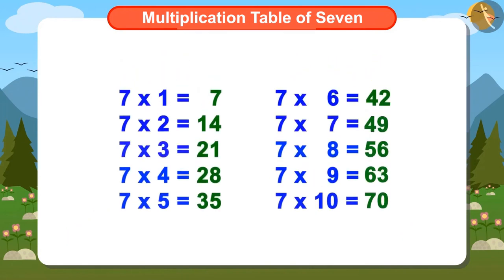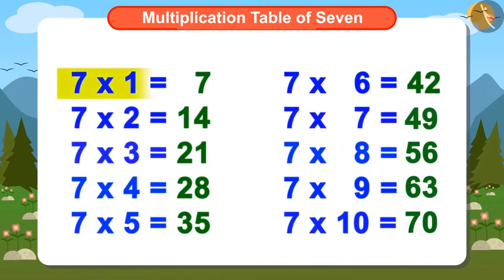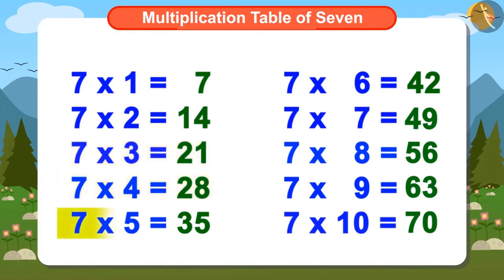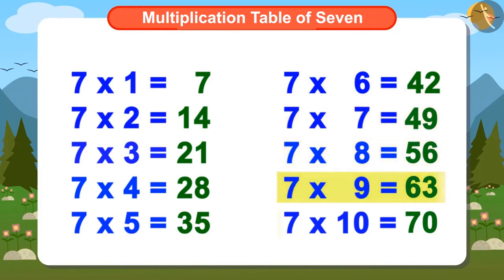Let's memorize it by singing: 7 ones are 7, 7 twos are 14, 7 threes are 21, 7 fours are 28, 7 fives are 35, 7 sixes are 42, 7 sevens are 49, 7 eights are 56, 7 nines are 63, 7 tens are 70.